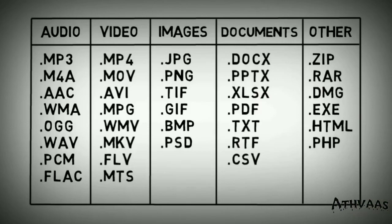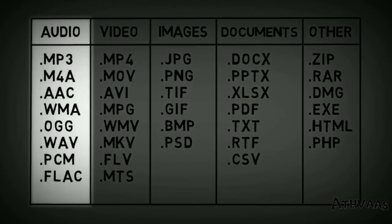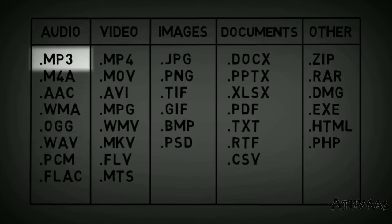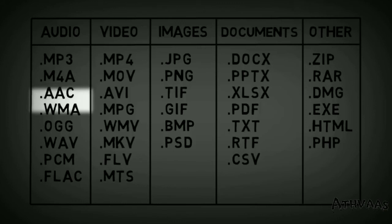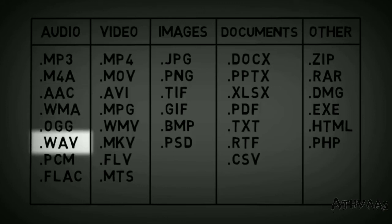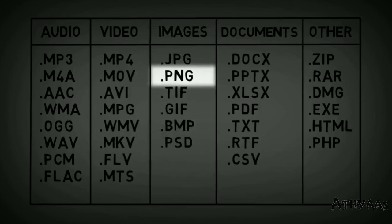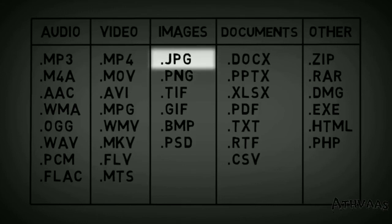You might be wondering why there are different types of extensions. Although these extensions store the same type of data, they serve different purposes. For example, in audio files, some formats are uncompressed, meaning they store high quality data, while others are compressed and reduce file size. A common example is WAV, which is an uncompressed format, and MP3, which is a compressed format. A similar comparison can be drawn for images: PNG is a high quality format and JPG is a lower quality, compressed format.